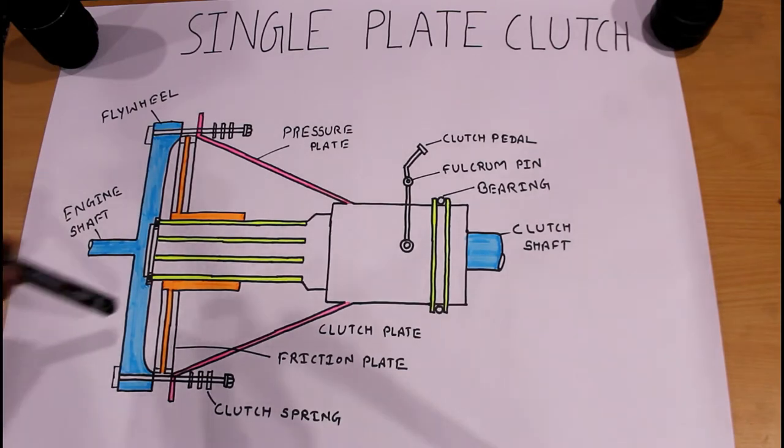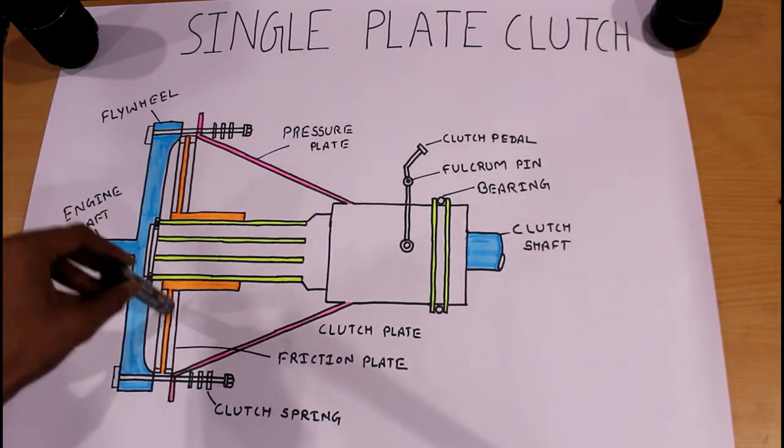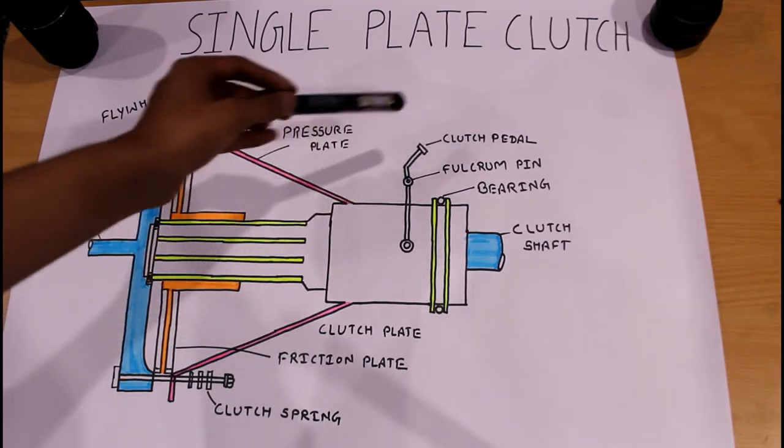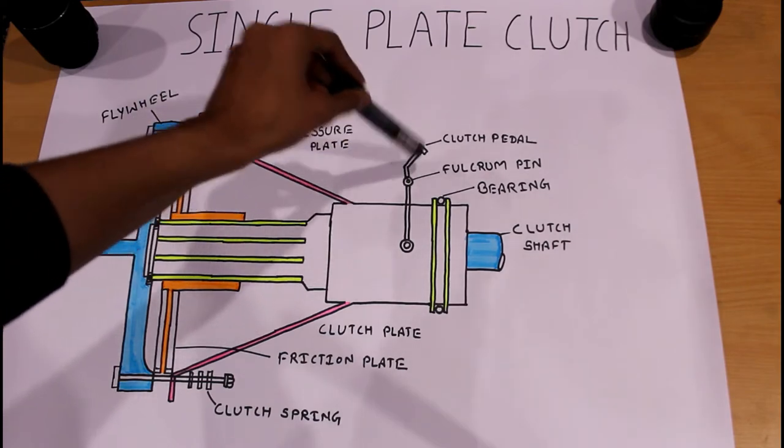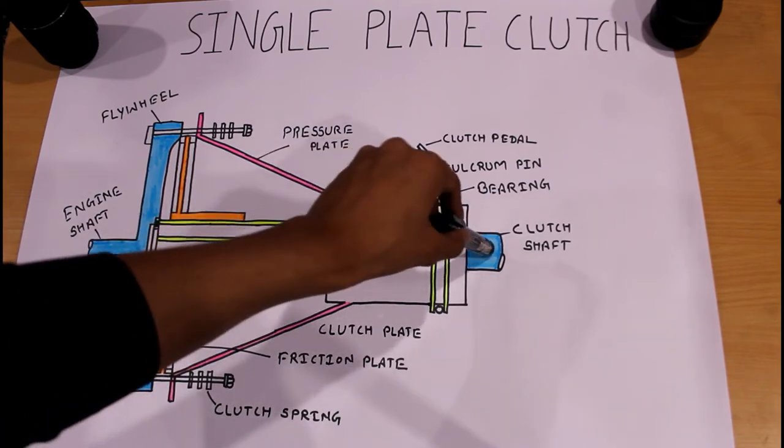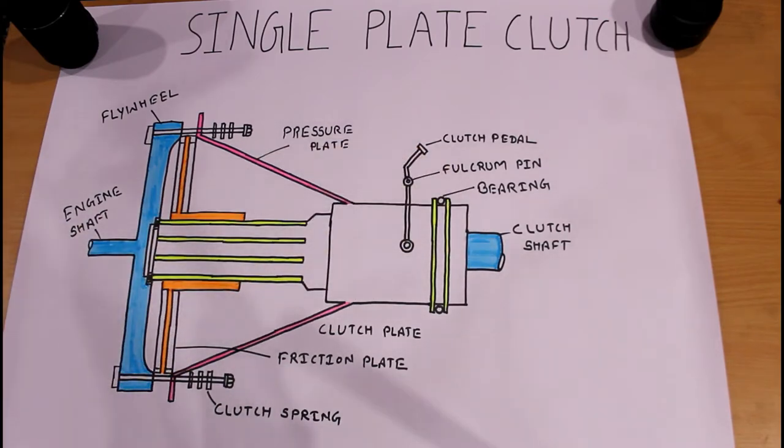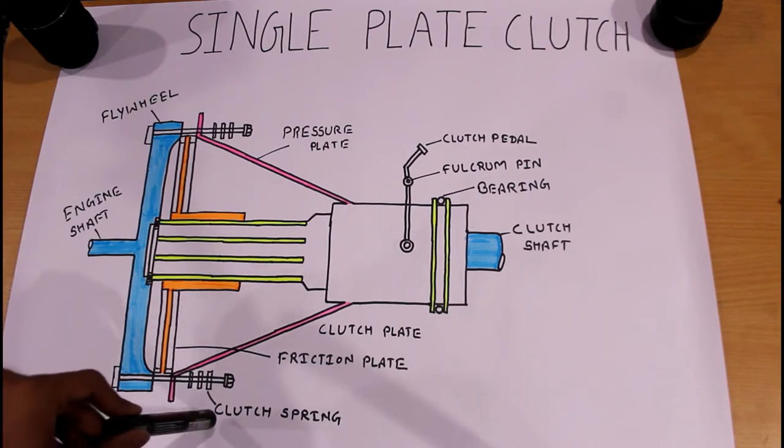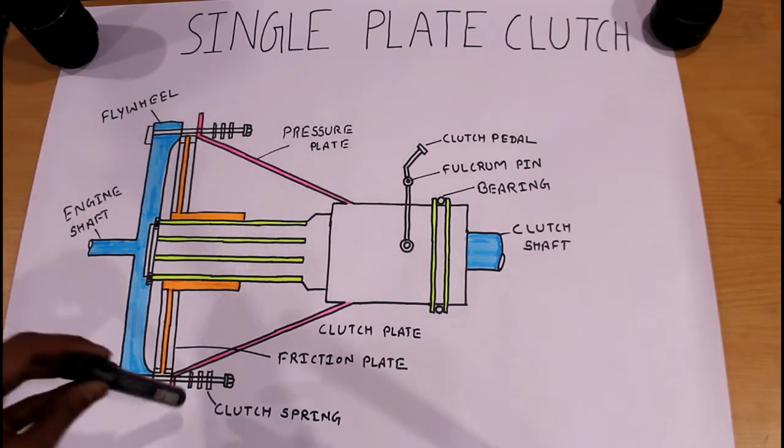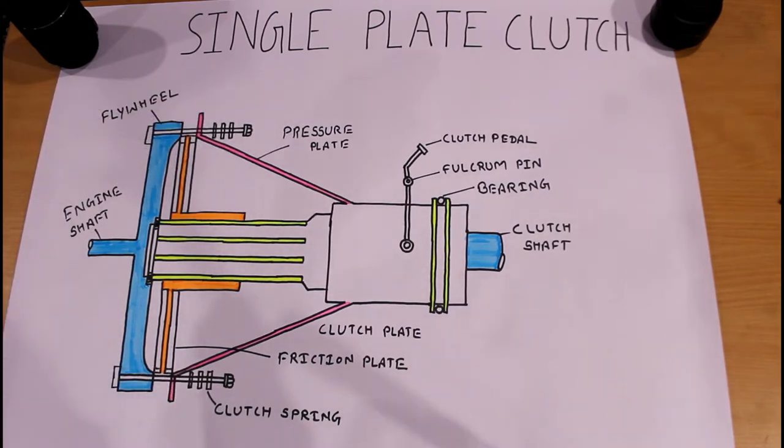If you disassemble sometimes, at that time only you can see this clutch plate and friction plate. Another basic part is the clutch pedal and the fulcrum pin, which is a joint of our two links, and the bearings and clutch shaft. This clutch shaft is an input shaft of a gearbox, and one more basic thing is the clutch spring. These are the springs. With these clutch springs, our pressure plates are continuously kept in contact.